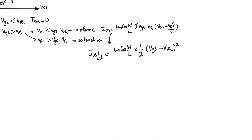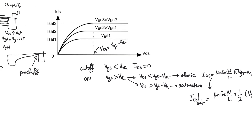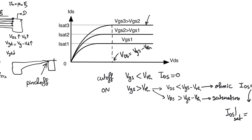In saturation, the current ceases to be a function of V_DS — it ceases to depend on the drain terminal. Current between drain and source is no longer a function of the voltage between drain and source; this is the behavior of a current source. Specifically, it is a voltage-controlled nonlinear current source, where the drain-source current is controlled by the gate potential. On the graph, the saturation curve is flat, indicating that the resistance seen at the drain is infinite, since the slope dI_DS/dV_DS corresponds to conductance.